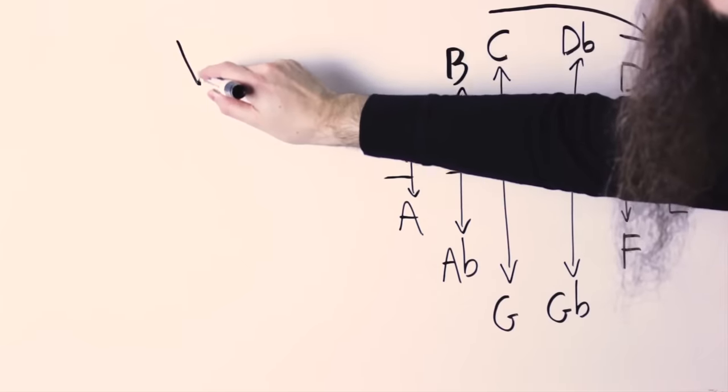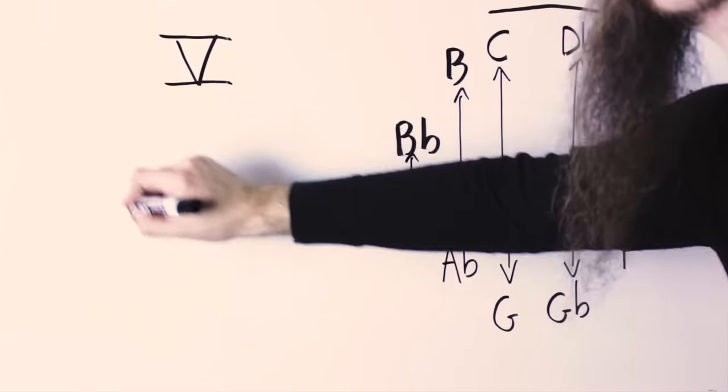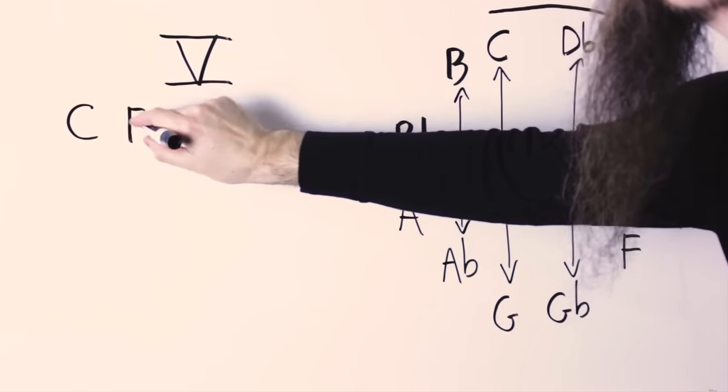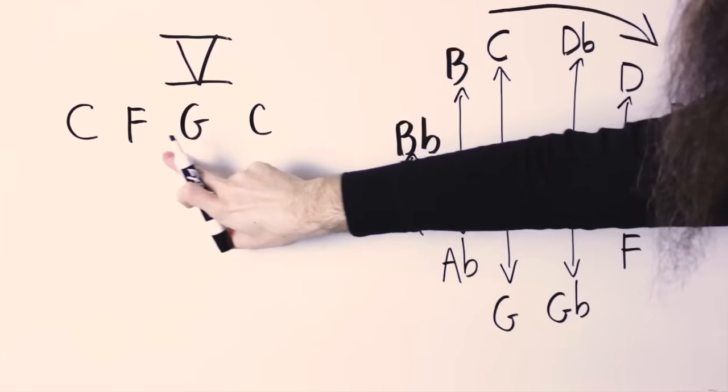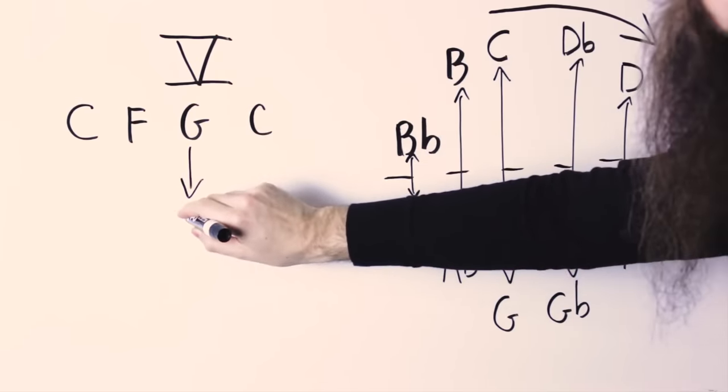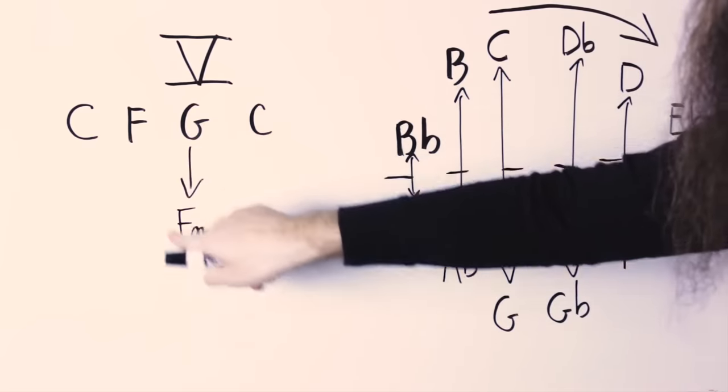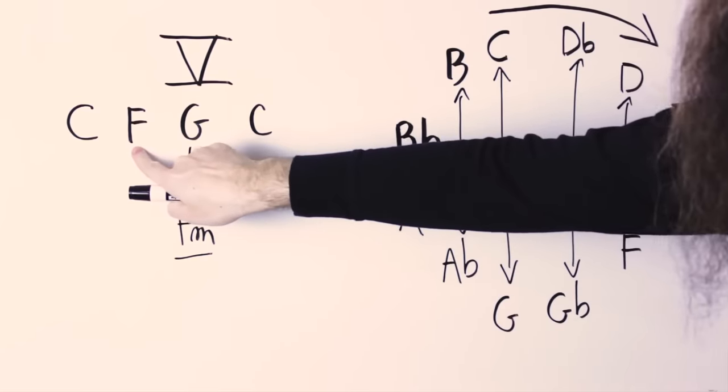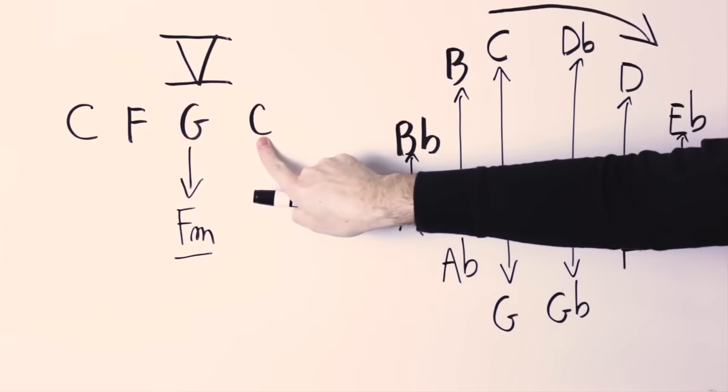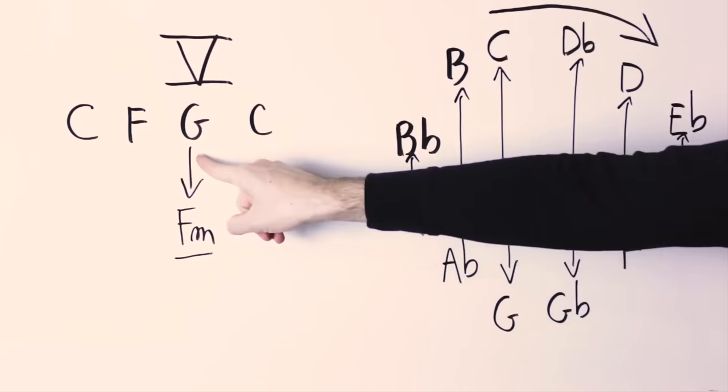Now, by far the most common way to use negative harmony is when we get the fifth chord of the key. So let's say I take a chord progression like C, F, G, C. If I apply the negative harmony only on the G chord, this G chord becomes an F minor chord, and my chord progression becomes C, F, F minor, C. You can hear how this F minor has some tension, just like the G major has some tension, and this tension pushes you towards the final C chord.